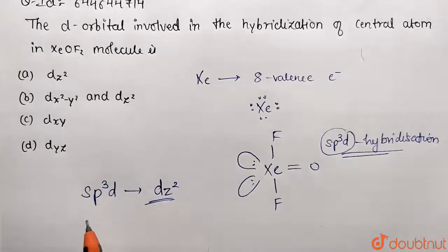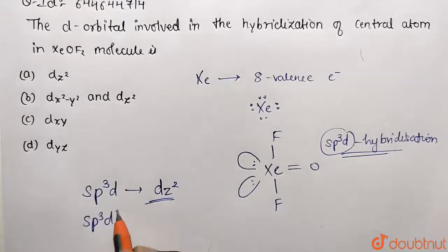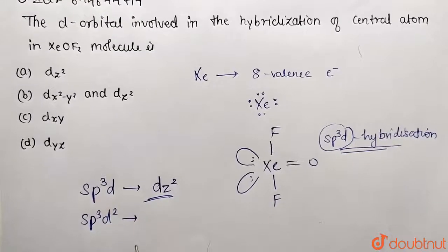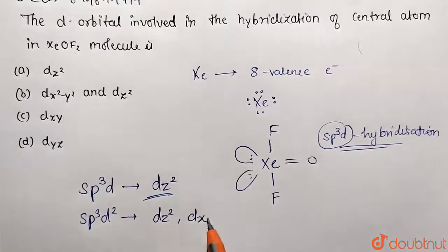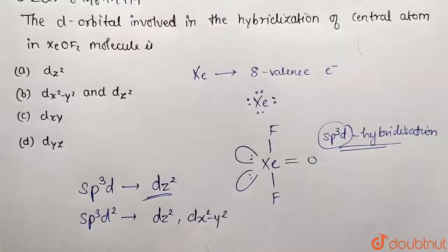And if hybridization is sp3d2, then there are two orbitals participating. What are they? First one is going to be dz square, and second one is going to be dx square minus y square. So these are the orbitals involved in this respective hybridization.